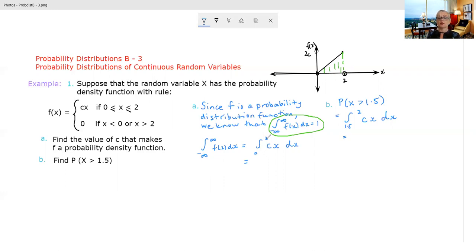Okay so from 0 to 2 of cx dx we are going to integrate. So integrating that we're going to get cx squared on 2 and we're going to sub in. So we're going to get c times 2 squared on 2 minus c times 0 squared on 2 which is of course nothing. So we're going to get 2c because we've got 4c on 2 and we know that has to be 1 in order for this to be a probability density function. Therefore c is going to be 1 half. So that's the first part of the question.